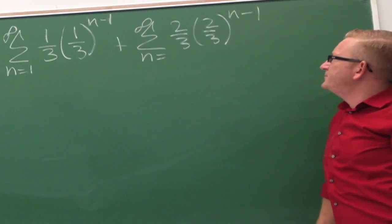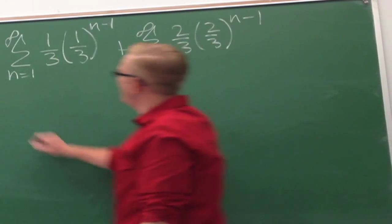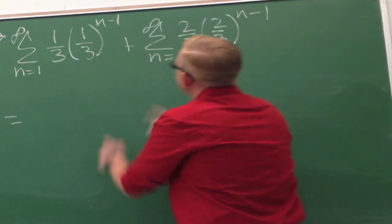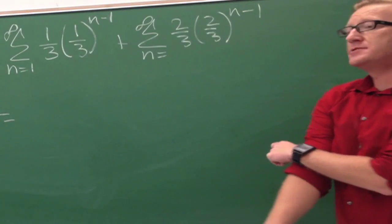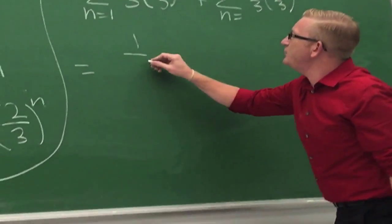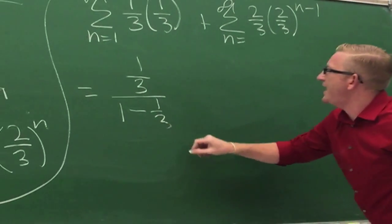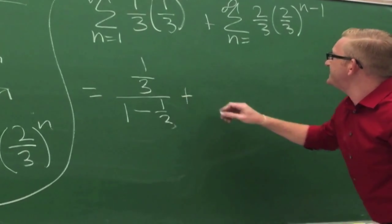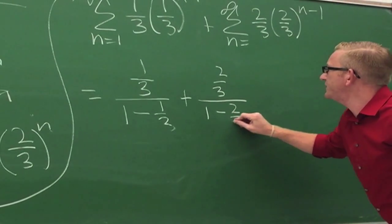Finish him. I got it. You ready? You ready? You ready? That converges. That converges because our r is smaller than one. So we go and we throw that a one. One-third. One minus one-third. And then I'm going to go ahead and I'm going to add it to two-thirds divided by one minus two-thirds.